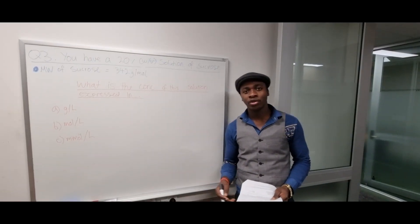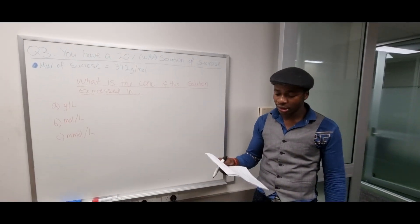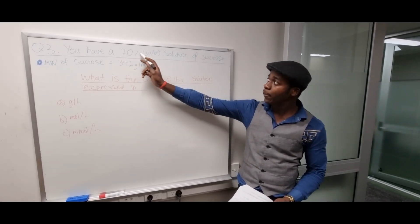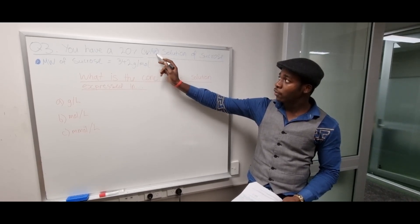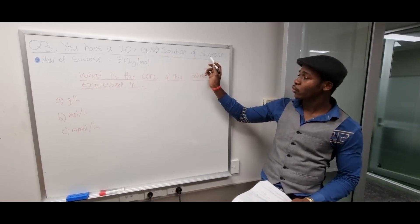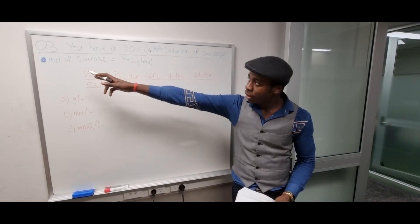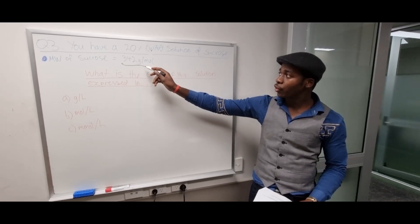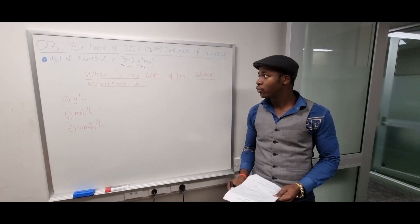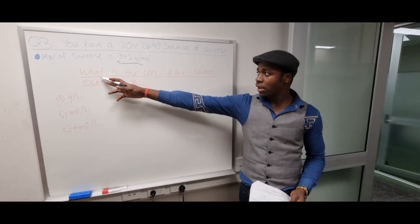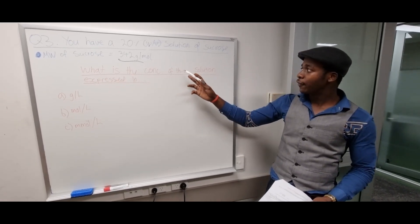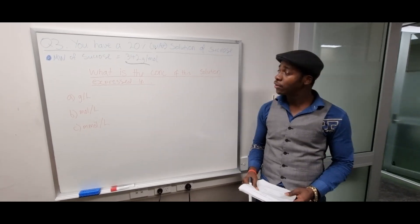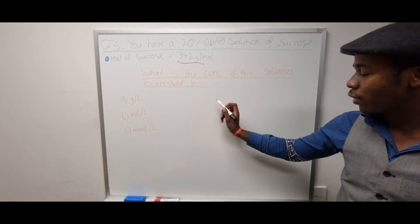We're continuing with our working sheet with the questions. We've been given that you have a 20% weight per volume solution of sucrose. The molecular weight of sucrose is given as 342 grams per mole. They're asking us what is the concentration of this solution expressed in different units. We'll write what we know right here.